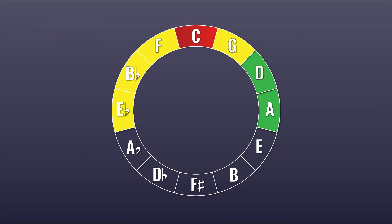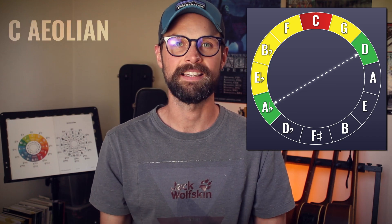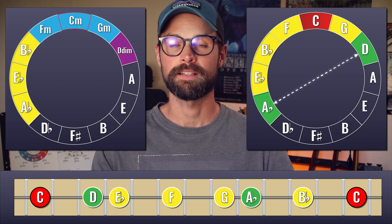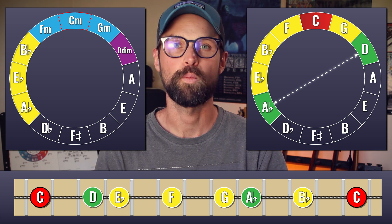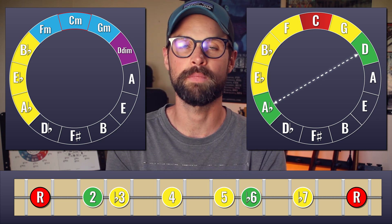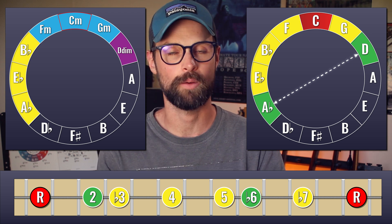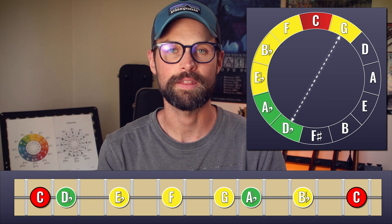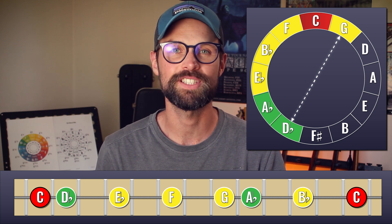Taking the segment another step counterclockwise, we replace the A with A-flat — flattening the sixth scale degree — and we have the notes of C Aeolian: C, D, E-flat, F, G, A-flat and B-flat. The characteristic tone of the Aeolian mode is that flattened sixth, seen again in the tritone. The last option for the minor modes is two segments counterclockwise of the minor pentatonic. We replace the D with D-flat — the 2 with the flat-2 — to give us the seven notes of C Phrygian: C, D-flat, E-flat, F, G, A-flat, B-flat.